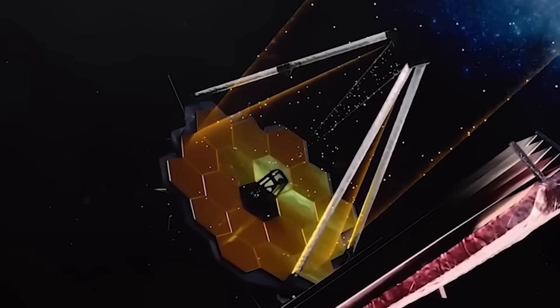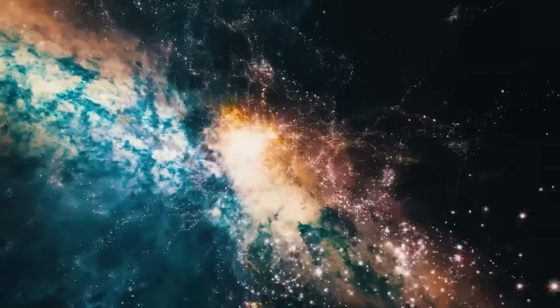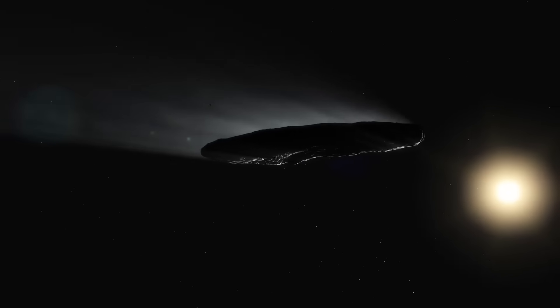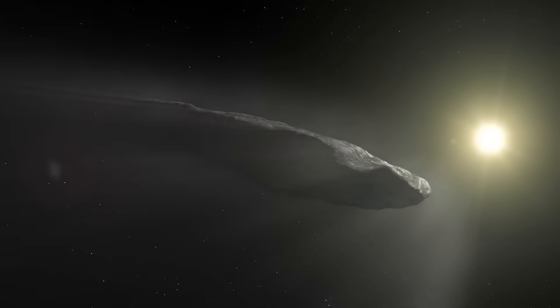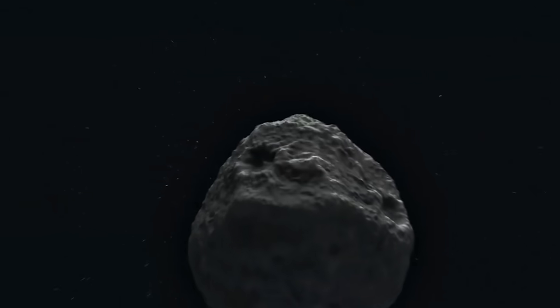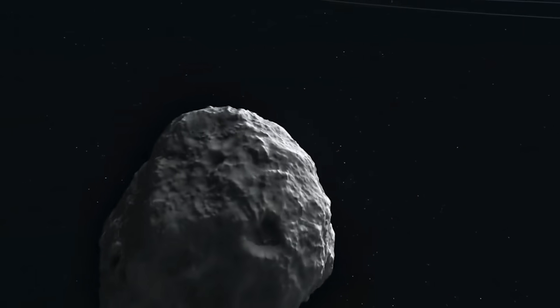When the James Webb Telescope locked onto 3I Atlas, scientists expected to see the familiar jagged irregularities of an icy rock. But Webb's powerful instruments revealed something that shattered those expectations. The surface of the object reflected light like polished metal, shimmering with an unnatural brightness that no cometary ice could produce. It was small, yes, but its reflectivity made it appear larger, as if designed to stand out rather than hide.